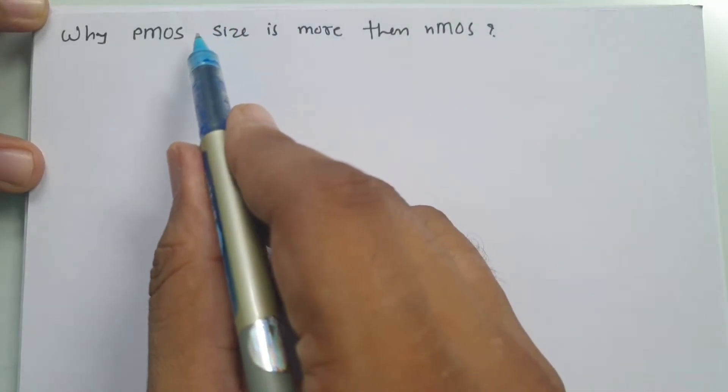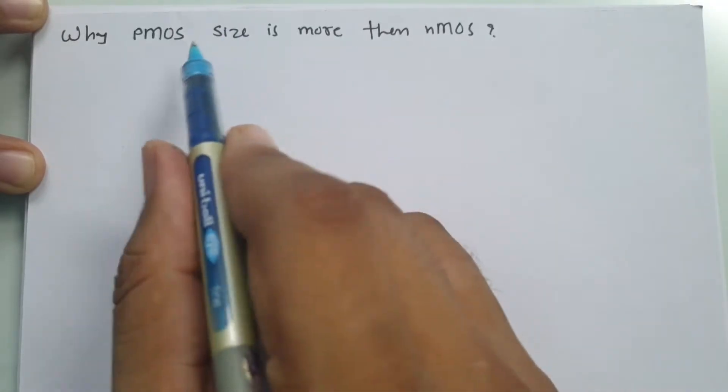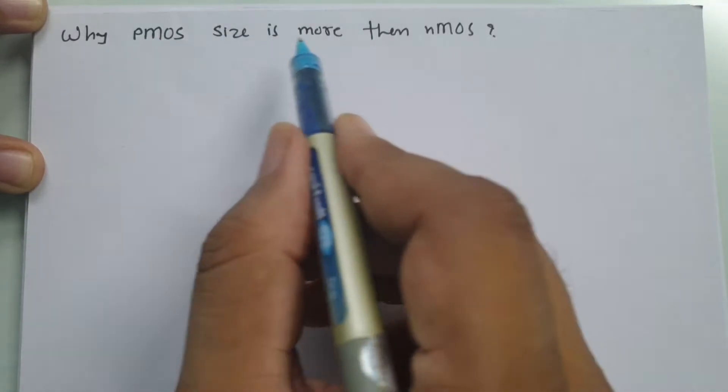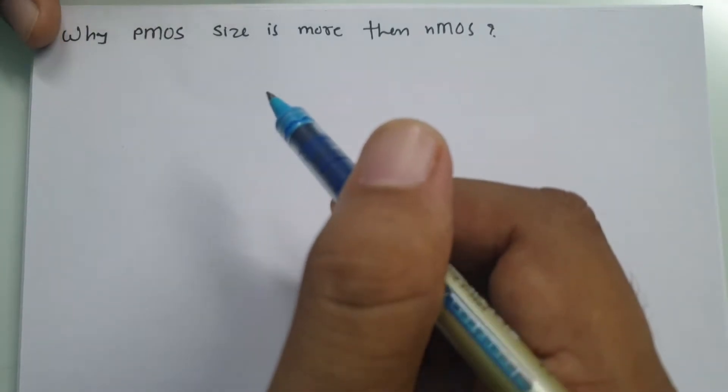This question is quite interesting. Let us try to understand how that is happening, like PMOS sizes are greater compared to NMOS size.